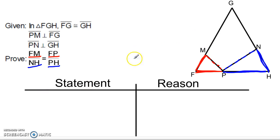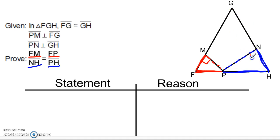So once you figure out your triangles, you're going to go on like a regular proof. You mark up your pictures, see what you got. I see that we have perpendicular lines — PM perpendicular to FG. So that means that these two angles over here are both right angles. I'll just go ahead and make this one a right angle. And over here, I have PN also perpendicular to GH, which means this is going to be a right angle. So clearly those angles are right angles. Maybe I'll number them 1 and 2, and they're going to be congruent. That's my first pair of angles in these triangles.